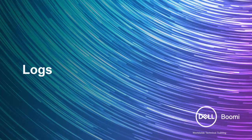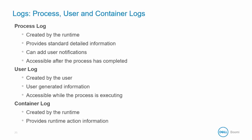Let's take a deeper dive into the logs that are available to you in Boomi. These are the various types of logs available to you along with some key characteristics of each. The process log is created by the runtime. This log provides standard detailed information about the actions that are taken in a process. It can be augmented by adding user notification entries by the user, and is accessible after the process has completed.